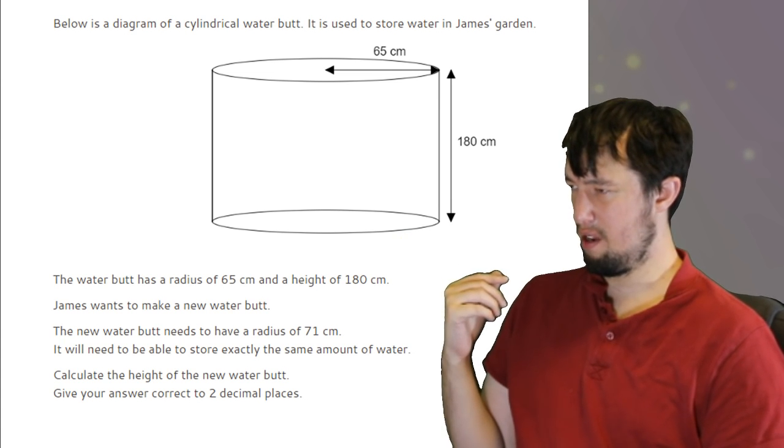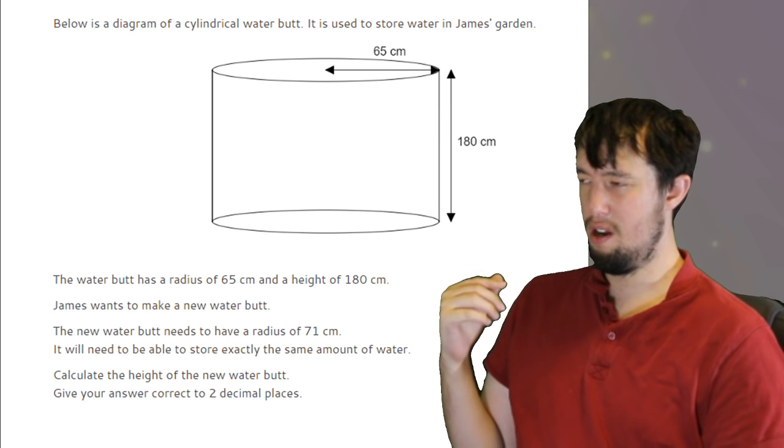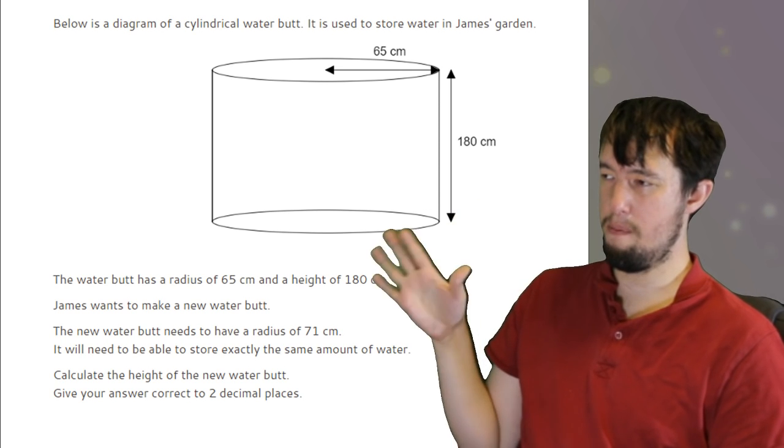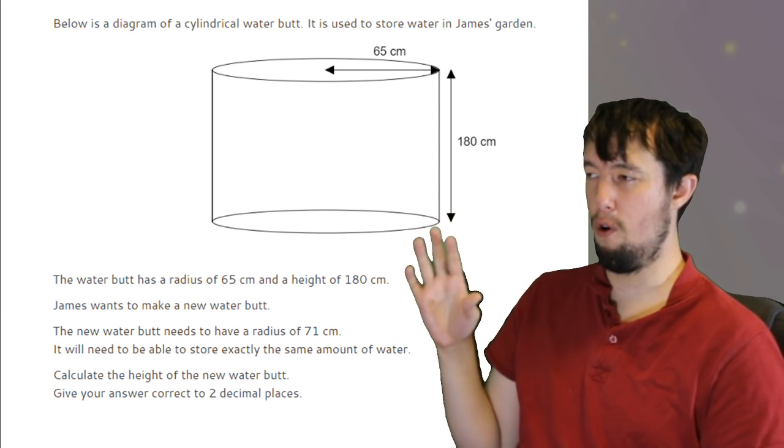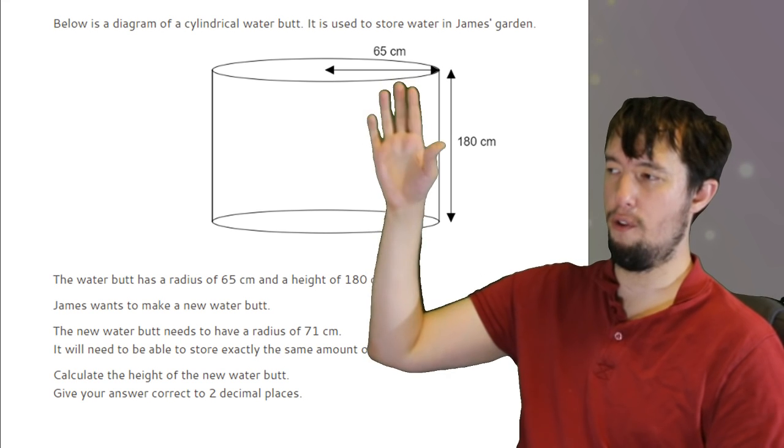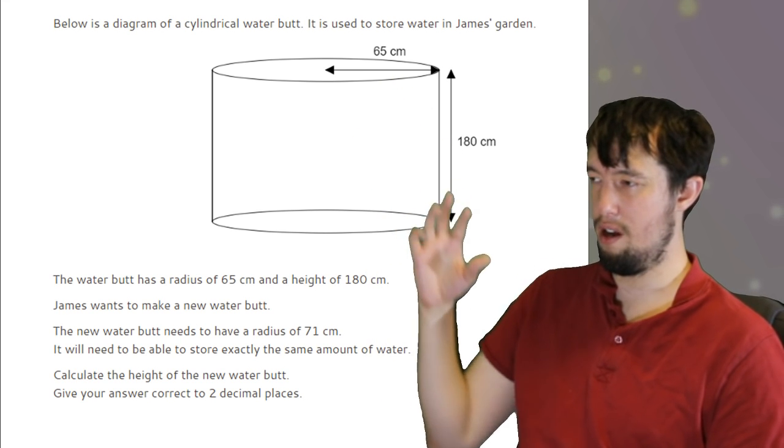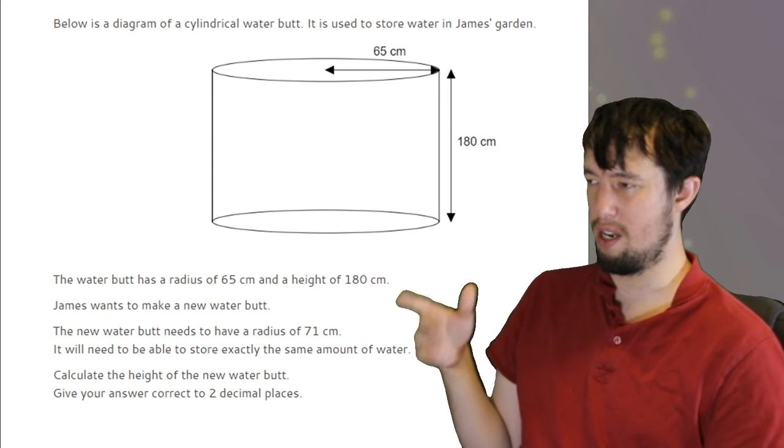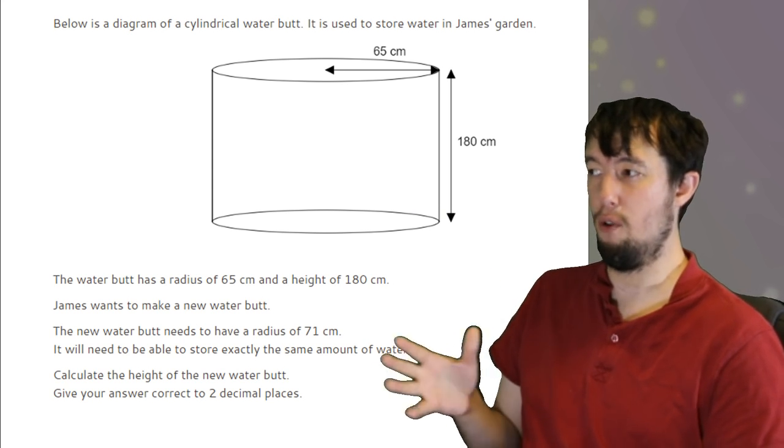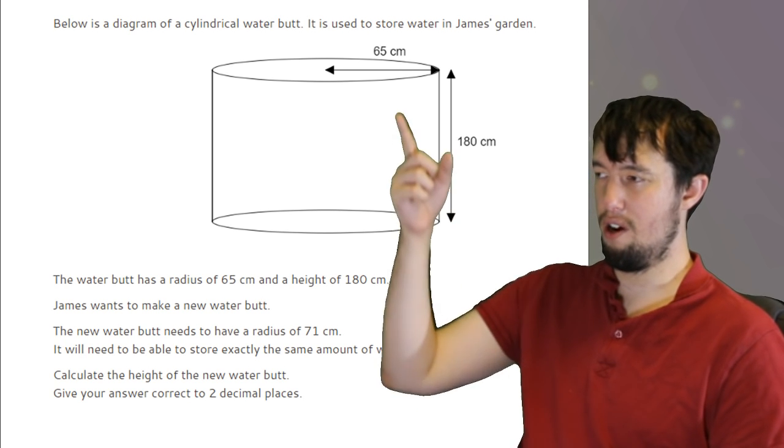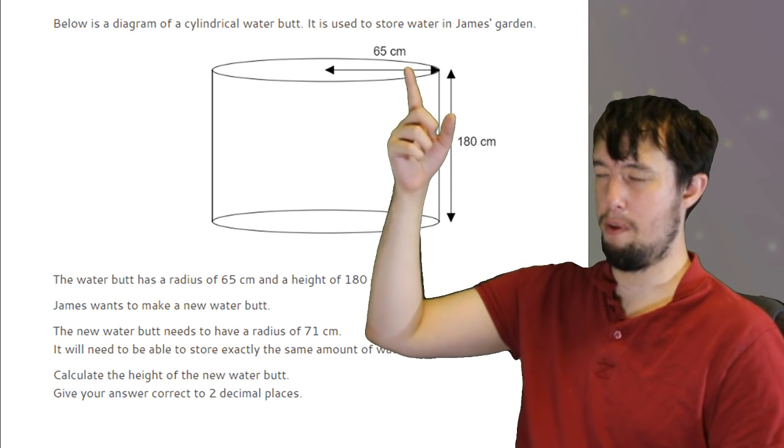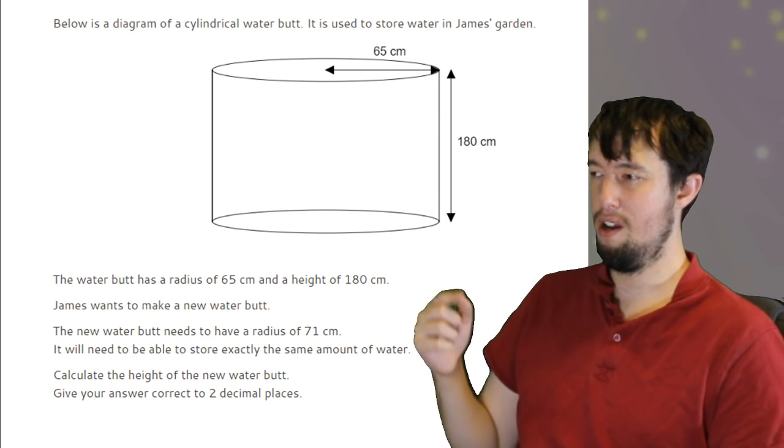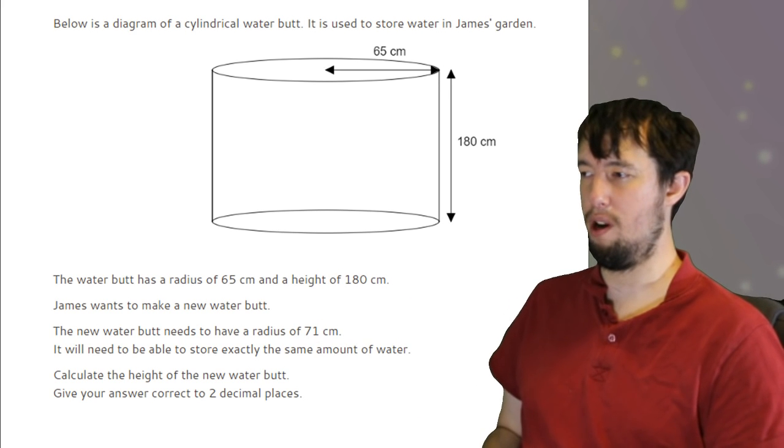Volume of cylinder, I think, is involved in this. These types of questions which waffle on and keep going on about stuff, just try and make sure you focus on things you know. I know how to work out the volume of this cylinder, and it looks like the question's sort of hinting that it wants me to, because it needs to store the same amount of water, so therefore it has the same volume. So I'd do 65 squared times pi, so pi r squared for the circle, and then times it by the 180.